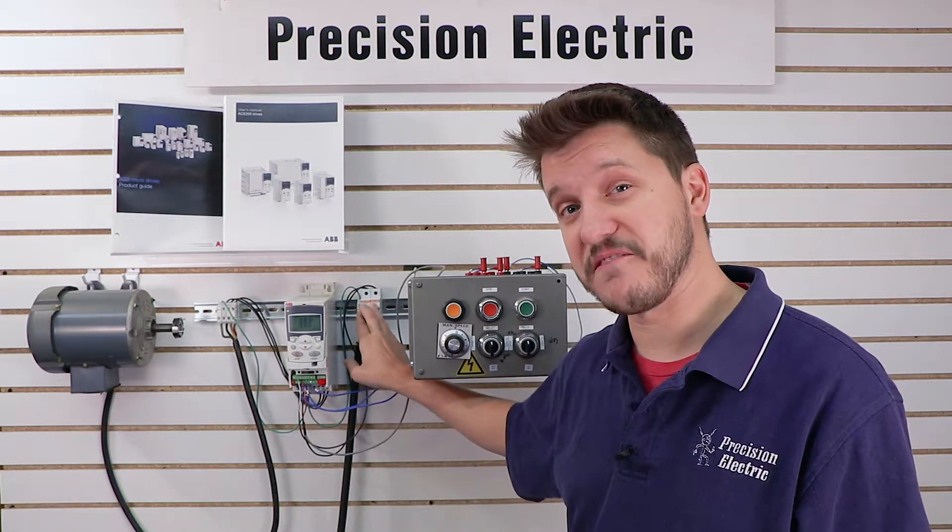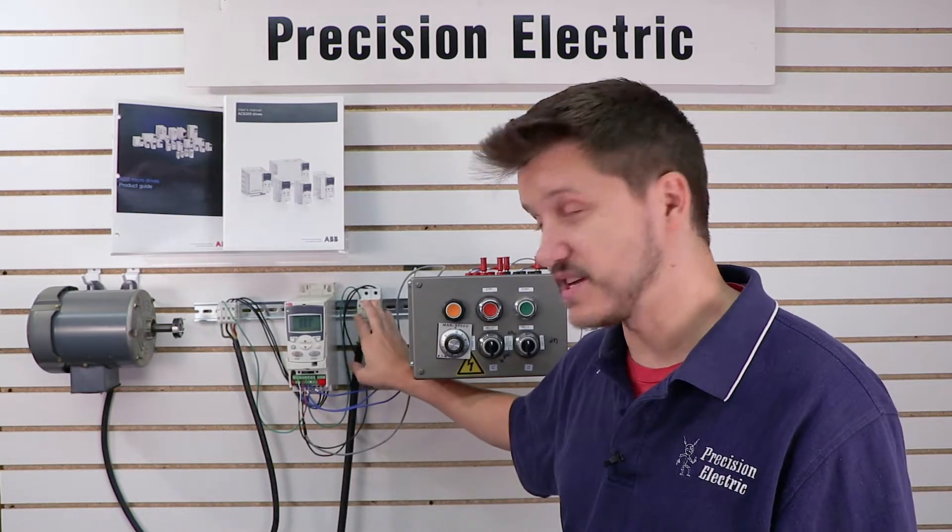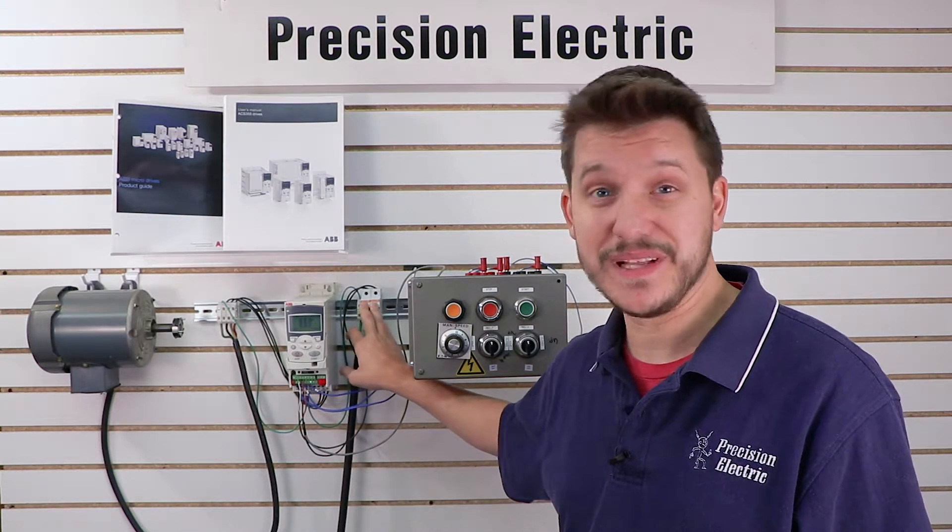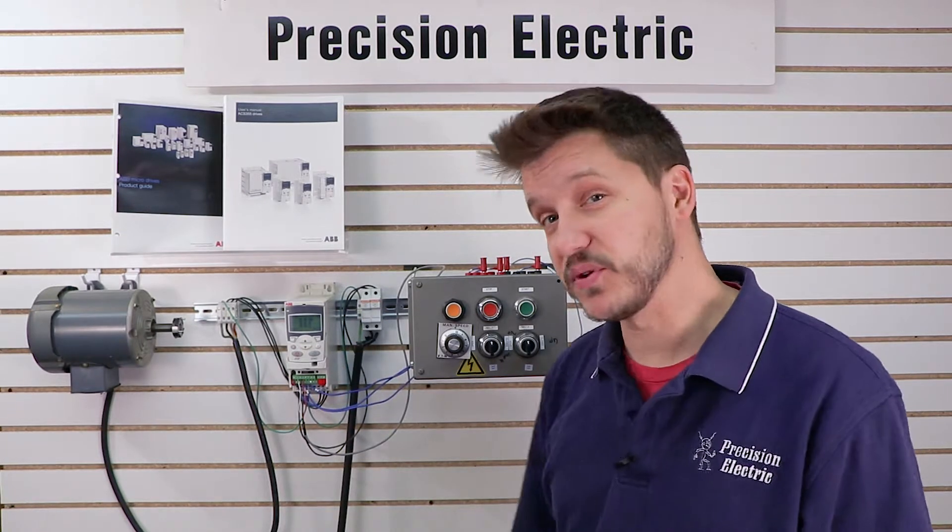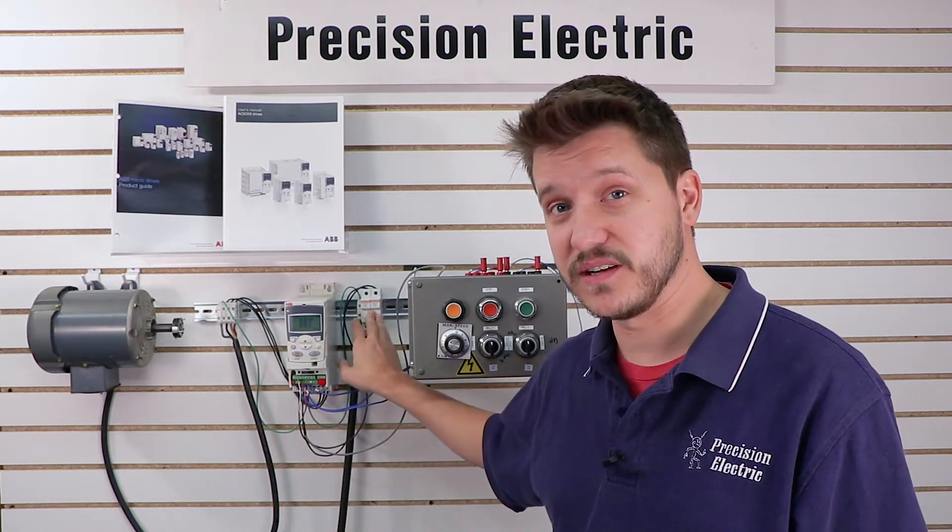The type of fuses we recommend, they're a little more expensive, are fast-acting current limiting fuses. And essentially, those are designed to blow within milliseconds of exceeding the rated current. A lot of people don't realize that. They don't take that extra step to get the fast-acting current limiting.